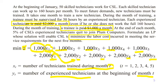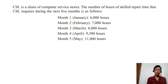If you hire someone to join training at month three, they will become an experienced technician at month four. So in the first month at CSL they are paid $1,000 because they are still in the training session; in the second month they are paid $2,000 because they have finished training and become an experienced technician. Now let's start defining the constraints.